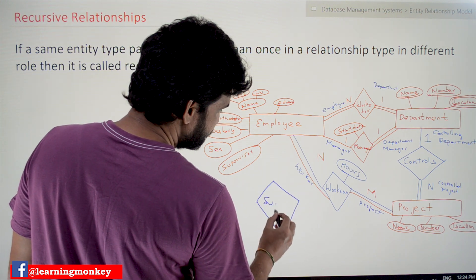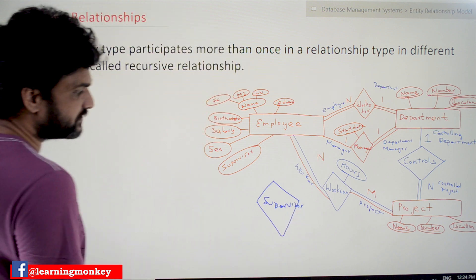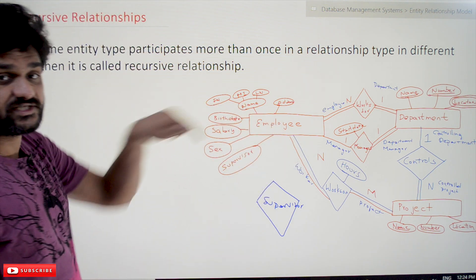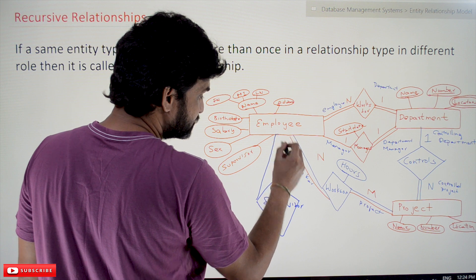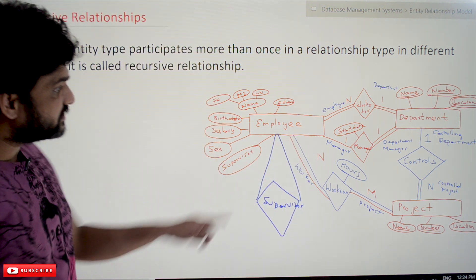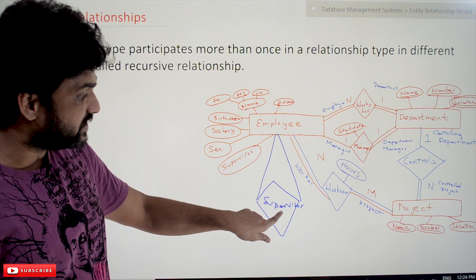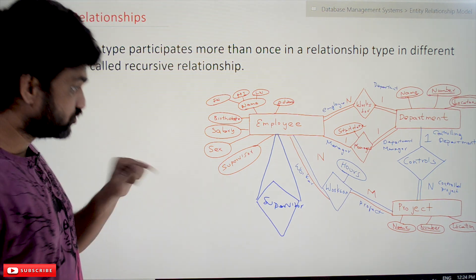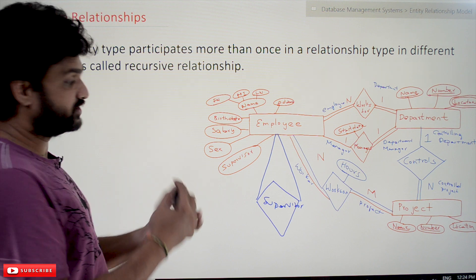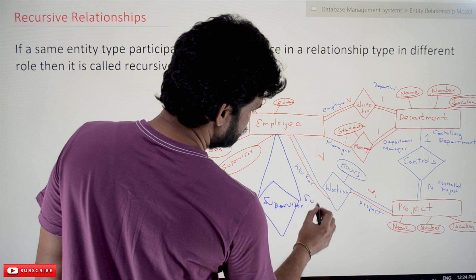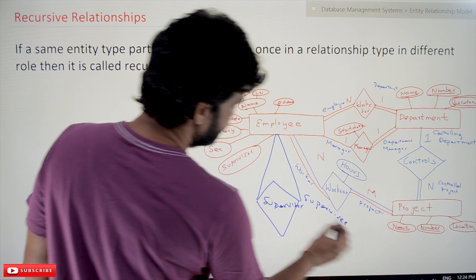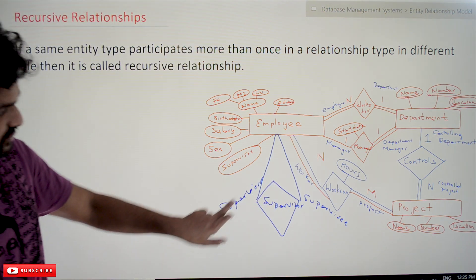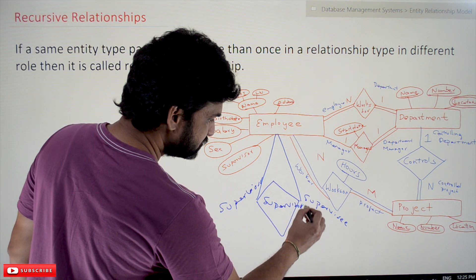The new relationship type is called supervision, and the entity types upon which supervision is acting are the same entity type — which is employee. So this entity type is participating more than once on a single relationship type, the supervision relationship type, but in different roles. One of those roles is supervisee — meaning just an employee under the boss — and the other role is supervisor.